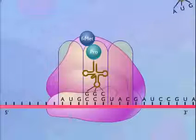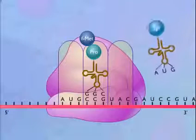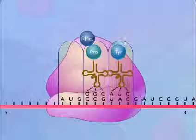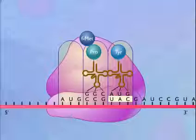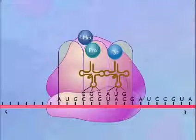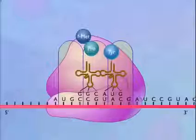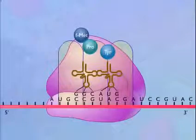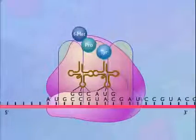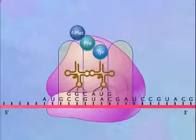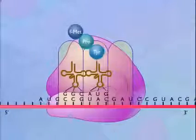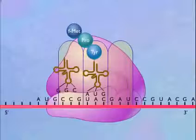A transfer RNA carrying the next amino acid now moves into the A-site where the anticodon on the transfer RNA matches the codon on the messenger RNA. The ribosome shifts down by a distance of one codon. As the shift occurs, the two amino acids on the transfer RNA in the P-site are transferred to the new amino acid, and the second transfer RNA is released from the E-site.